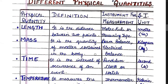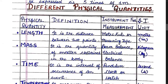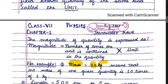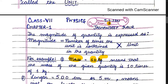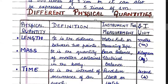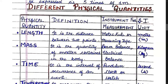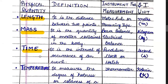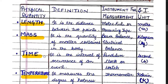Now let us learn different physical quantities. You can see a table on page number 2 of the notes provided to you on 5th April 2021. I have written different quantities — length, mass, time, and temperature — with the definition of each quantity, the instrument used to measure it, and the different units.